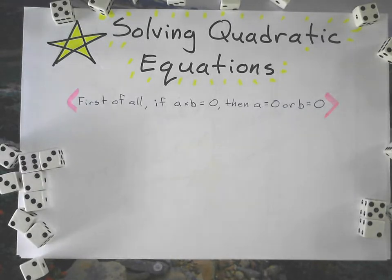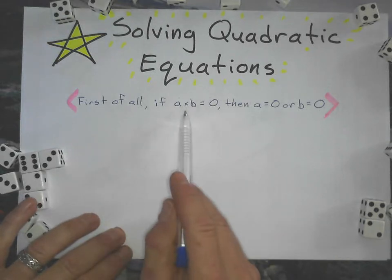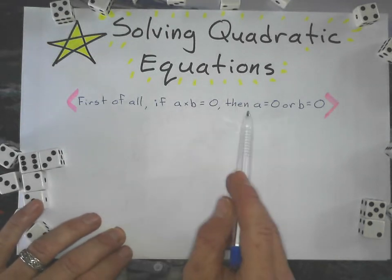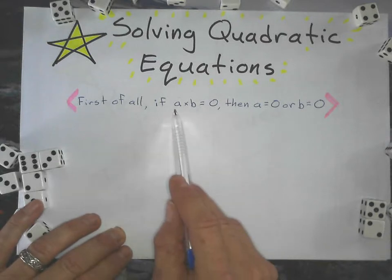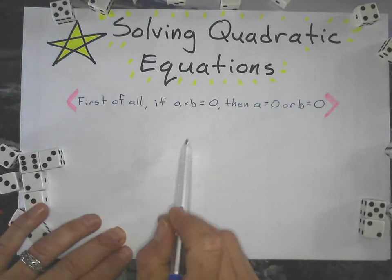The first thing we need to know with quadratic equations is a simple zero concept: if I'm multiplying two numbers and the product is zero, then one of those factors has to be zero.